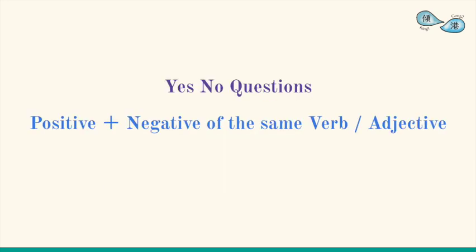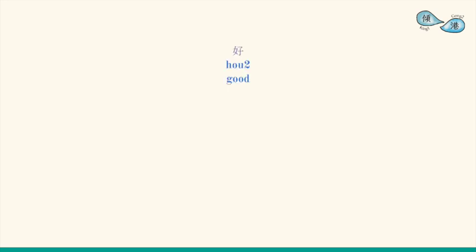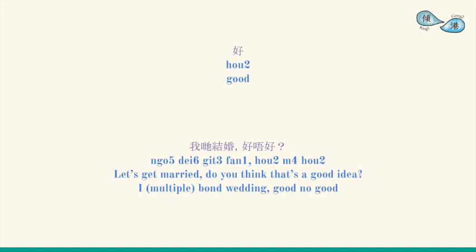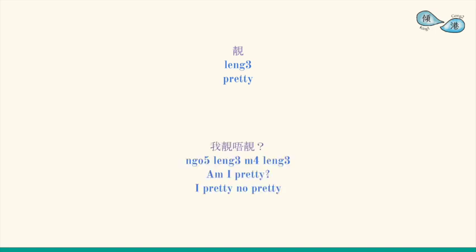Aside from verbs, the same structure also applies to adjectives. 好 means 'good', so 好唔好 means 'do you think this is a good idea?' For example: 我地結婚好唔好? (Shall we get married?) 靚 means 'pretty', so 我靚唔靚? means 'Am I pretty?'